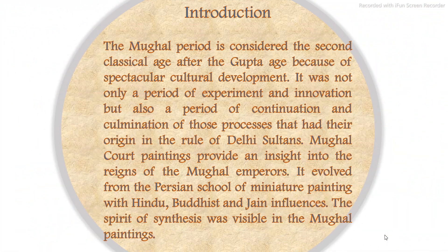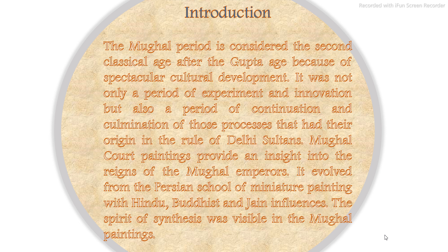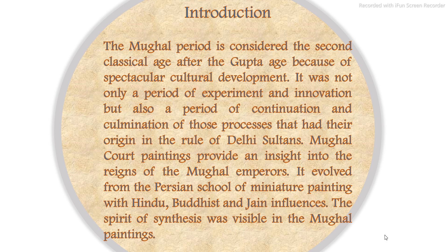The Mughal period is considered the second classical age after the Gupta age because of their spectacular cultural development. It was not only a period of experiment and innovation, but also a period of continuation and culmination of those processes that had their origin in the rule of Delhi sultans. Mughal court paintings provide an insight into the reigns of the Mughal emperors. It evolved from the Persian school of miniature painting with Hindu, Buddhist and Jain influences. The spirit of synthesis was very much visible in the Mughal paintings.